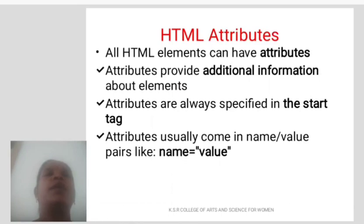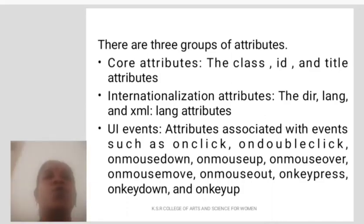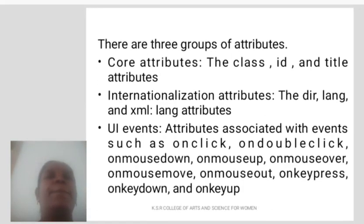HTML Attributes: All HTML elements can have attributes. Attributes provide additional information about elements and are always specified in the start tag. Attributes usually come in name/value pairs like name equal to value. There are three groups of attributes: Core attributes — the class, ID, and title attributes; Internationalization attributes — the DIR, LANG, and XML:lang attributes; and UI Events — attributes associated with events such as onclick, ondblclick, onmousedown, onmouseup, onmouseover, onmousemove, onmouseout, onkeypress, onkeydown, and onkeyup. Thank you.